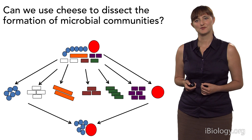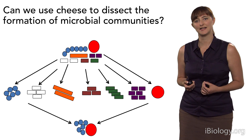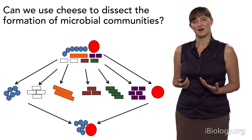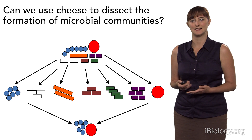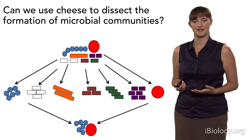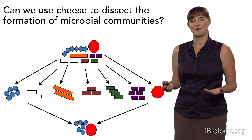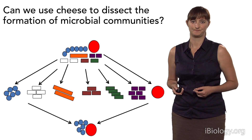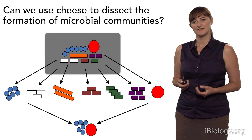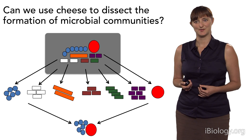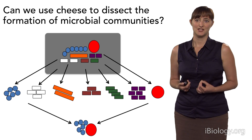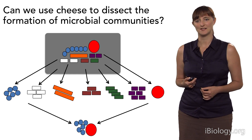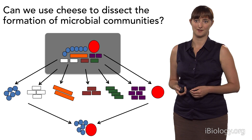We'd like to use this wonderful fermented food to dissect the formation of microbial communities — using cheese as a model ecosystem where we can study the diversity and ecology in its natural state, dissect it in the lab, and recreate conditions to understand how communities form. The first step was to actually characterize what types of microbes are present. Despite the fact that cheese has been made for thousands of years, we don't really have a complete understanding of what types of microbes are present on cheese or in many other fermented foods.